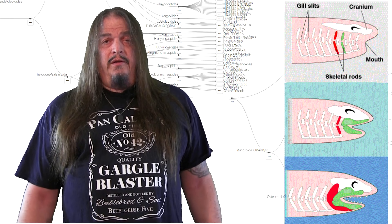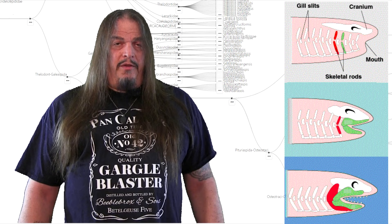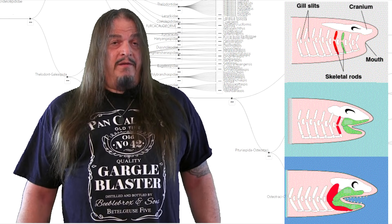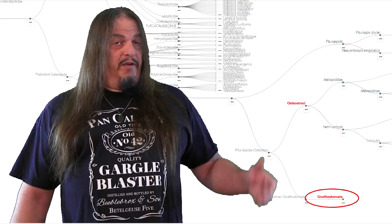But once those muscles had a hinged lever to work with, they could do something no other fish could. They could bite, and that gave them the edge over everything else that ever lived, which we'll talk about in the next video.